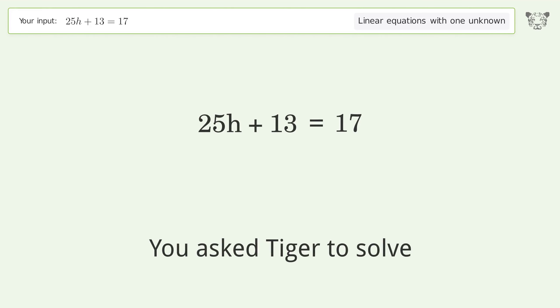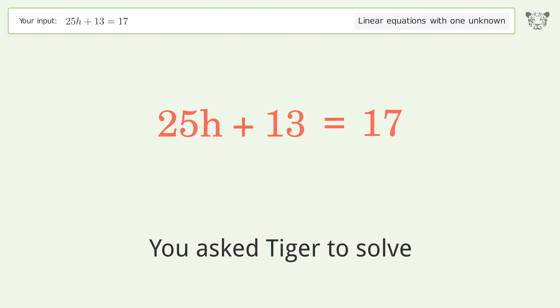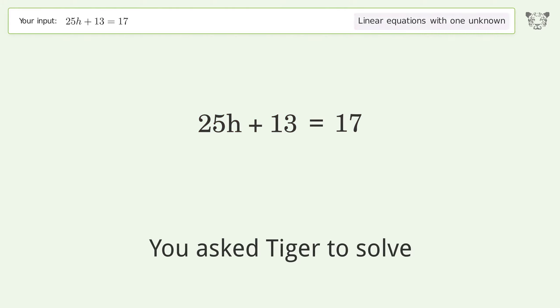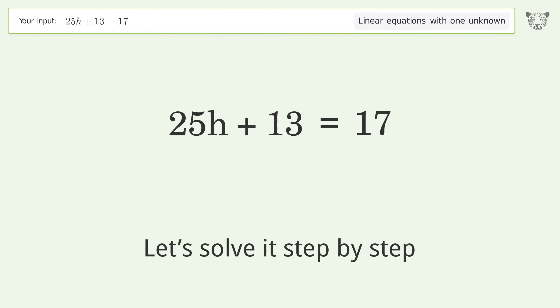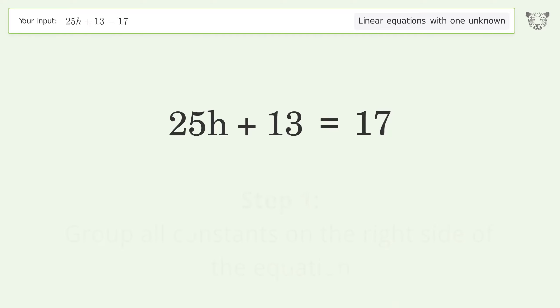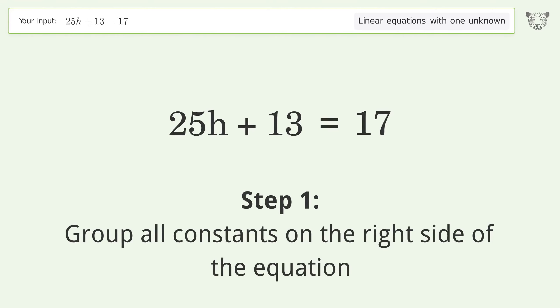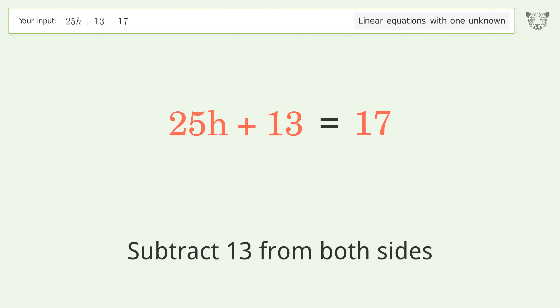You asked Tiger to solve this — it deals with linear equations with one unknown. The final result is h equals 4 over 25. Let's solve it step by step. Group all constants on the right side of the equation; subtract 13 from both sides.